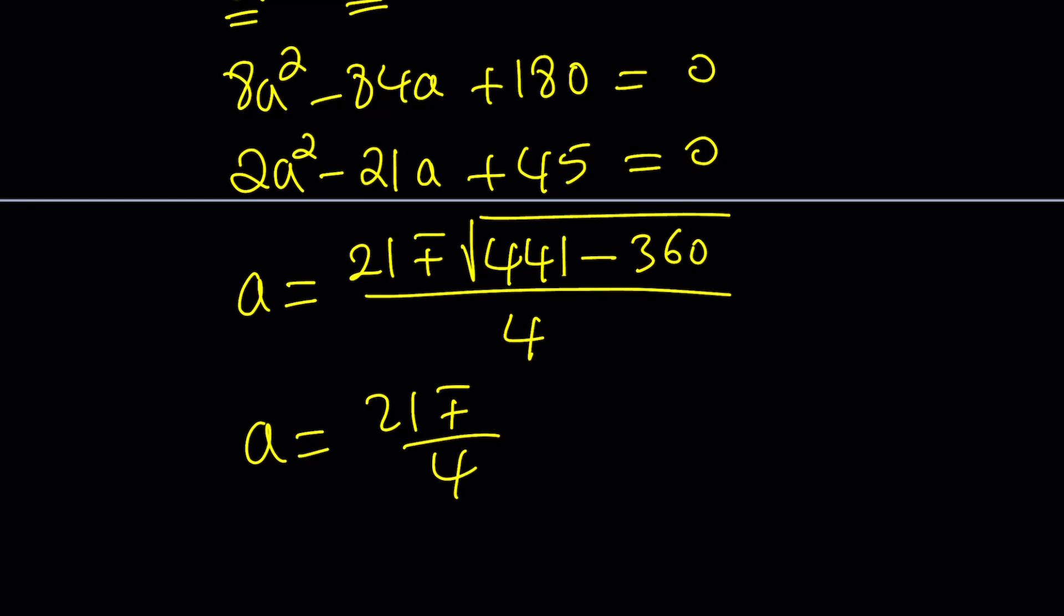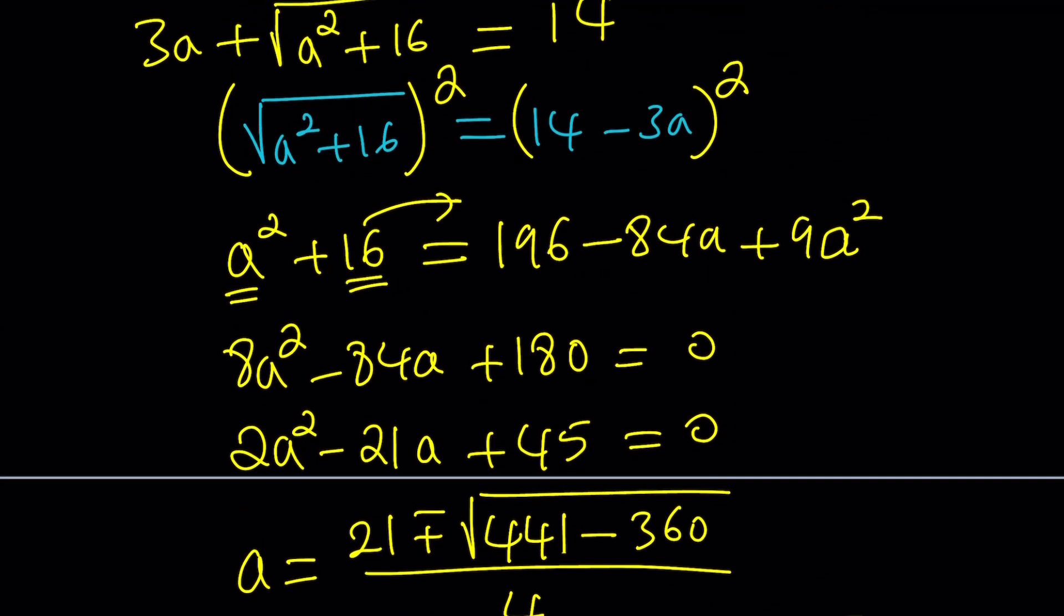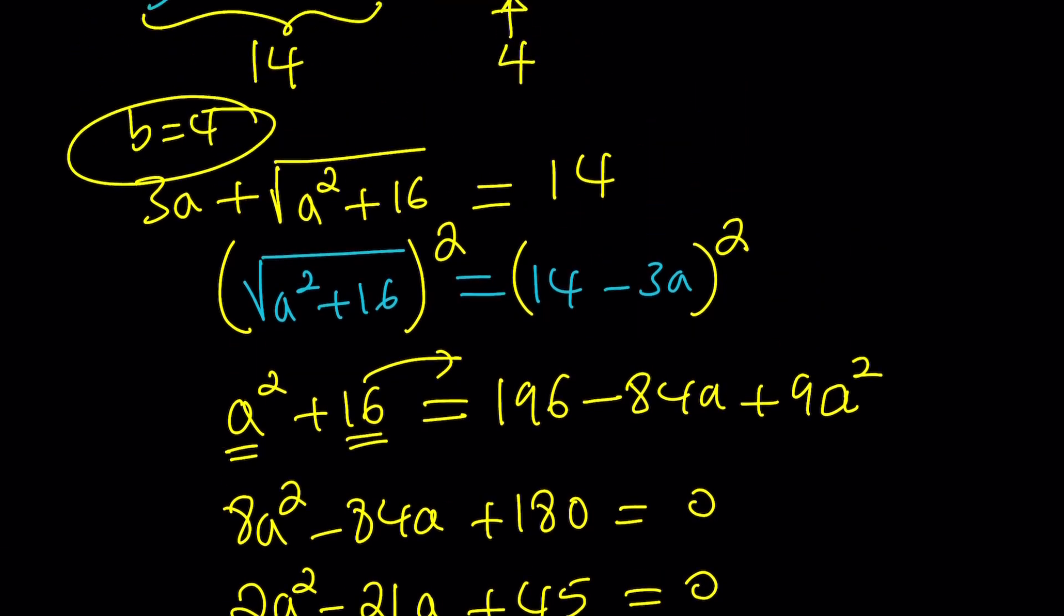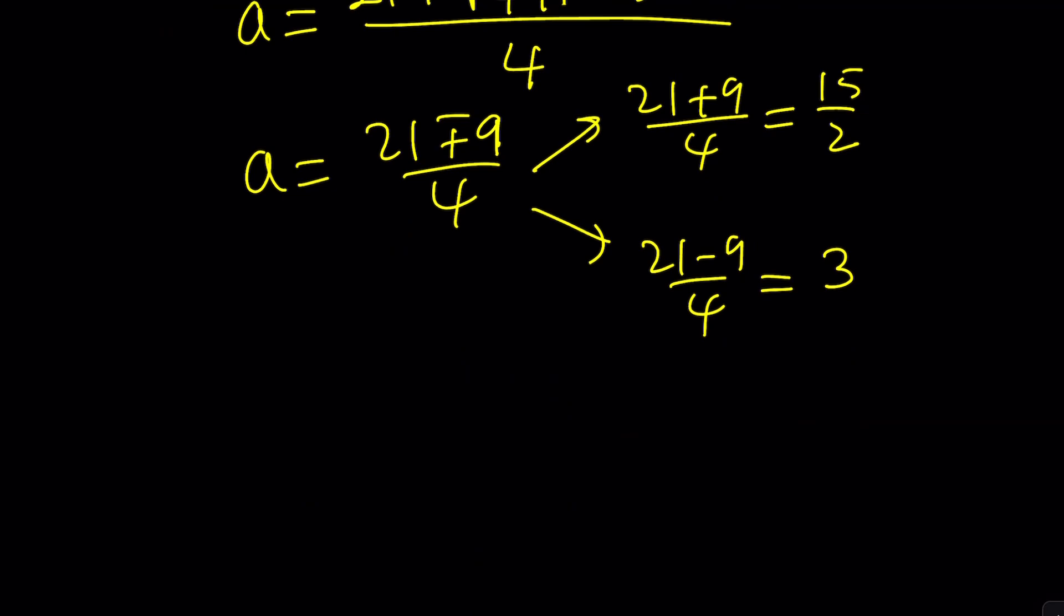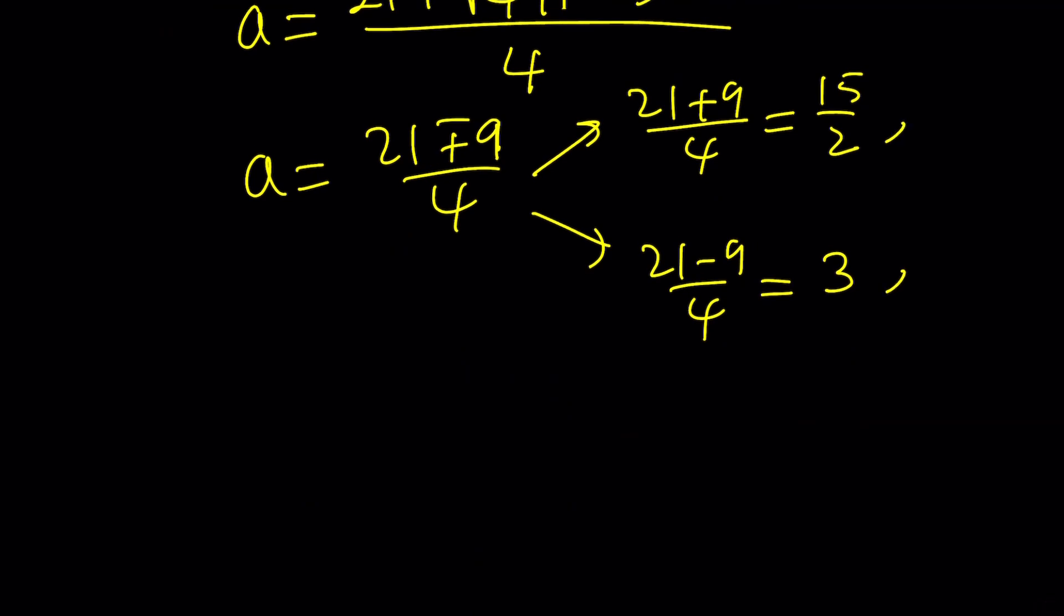Anyways, I can't write a 9. And then, exactly. So from here we get two things. 21 plus 9 over 4 and 21 minus 9 over 4. This is 30 divided by 4, which is the same thing as 15 halves. And this is 12 over 4, which is 3. Awesome. Those are the A values. Were we looking for A? Yes, and B. But B is 4. It's just that. Okay, B is always 4. So these are A values and B is going to be 4.